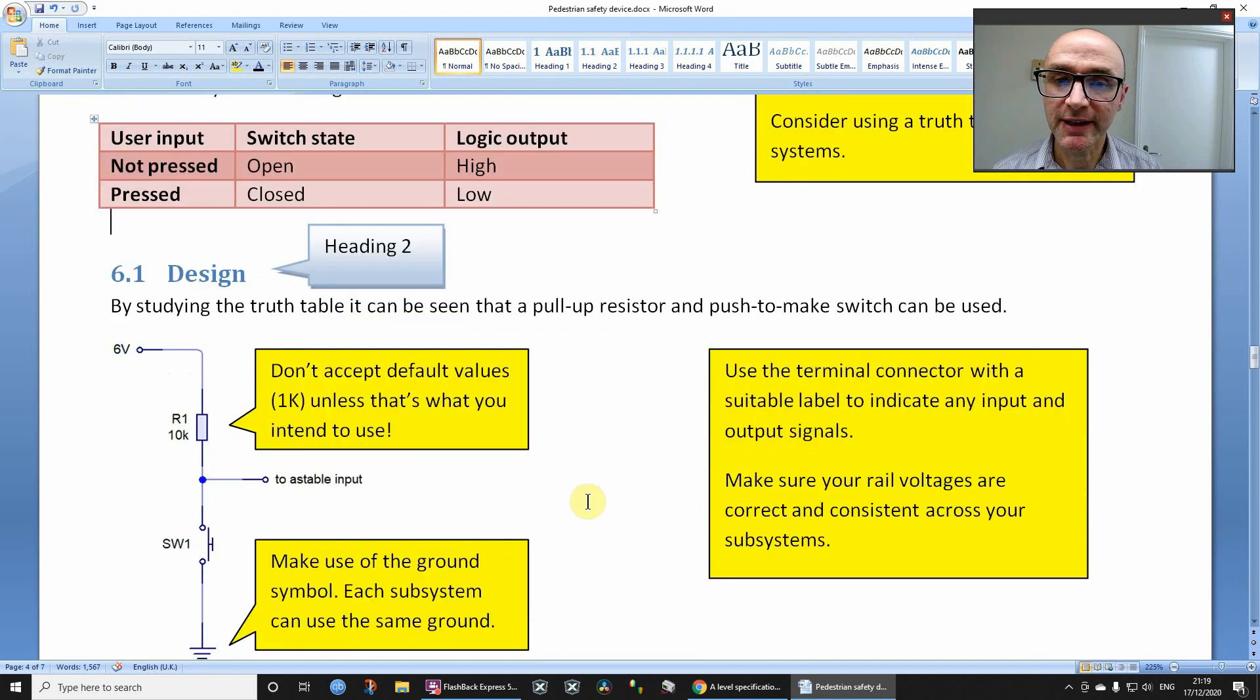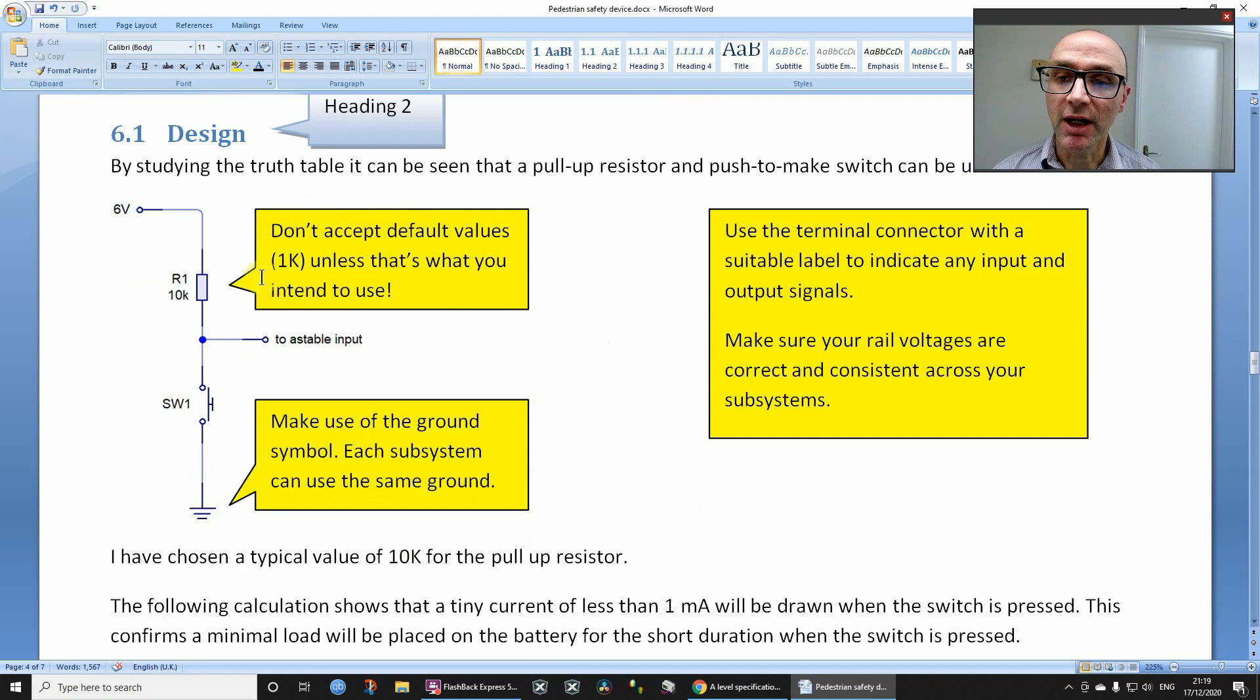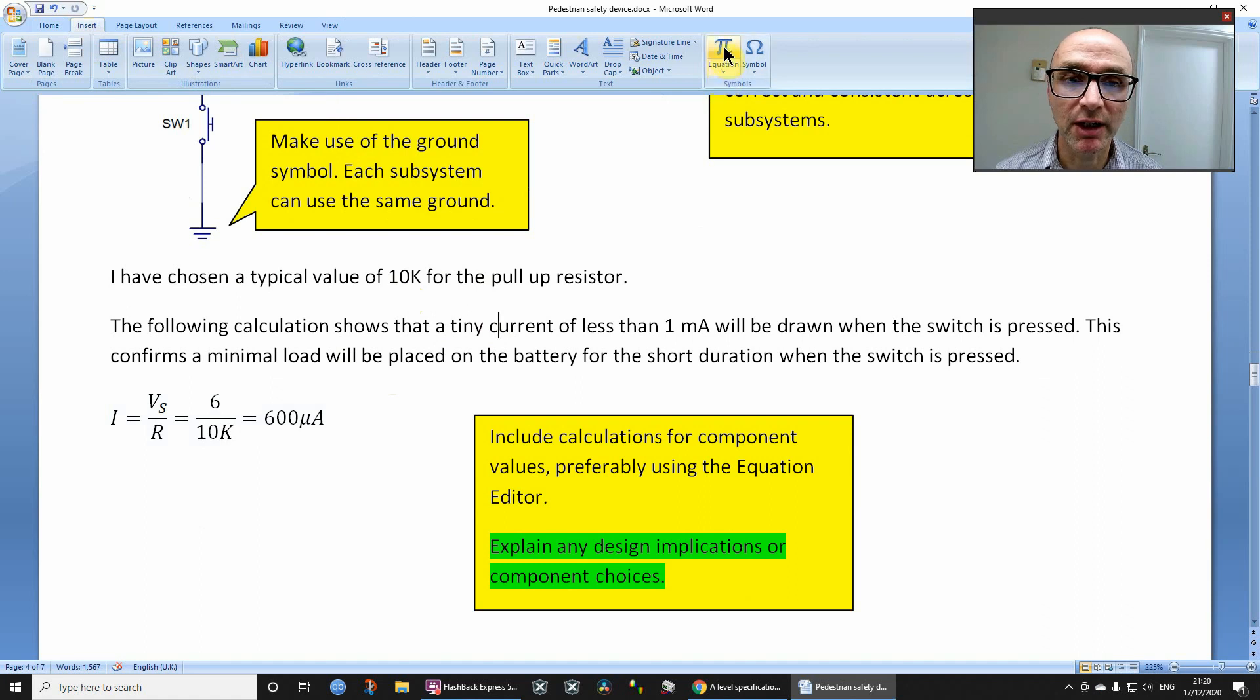Truth tables are a good idea, remember if you want a slower look at what I'm presenting you can just pause the video can't you. So if you use valued resistors which you should be doing don't just accept the defaults in circuit wizard, so justify your values show calculations here I've used the equation editor so if you go insert equation then you can insert an equation.